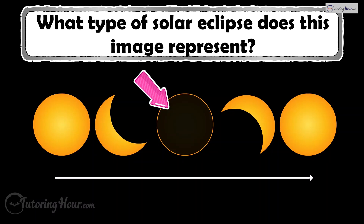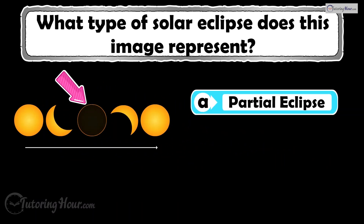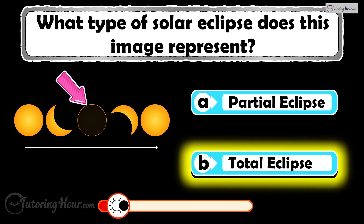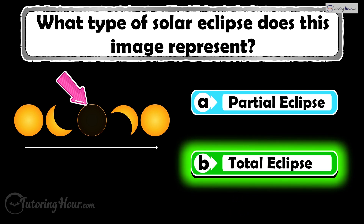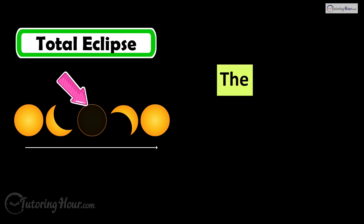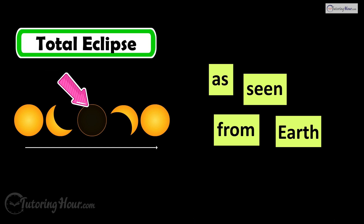What type of solar eclipse does this image represent? Is it A, partial eclipse, or B, total eclipse? The correct answer is a total solar eclipse. The moon completely covers the sun as seen from Earth.